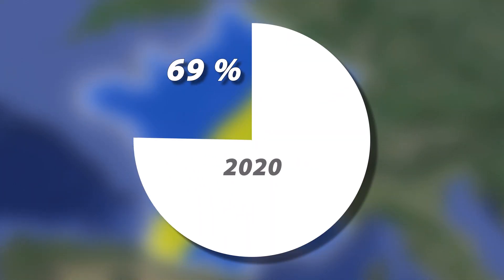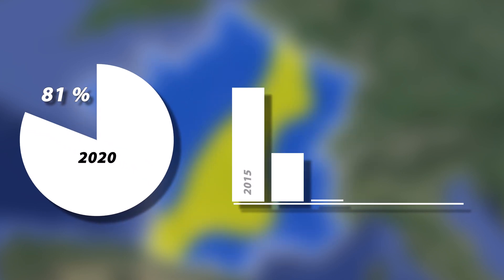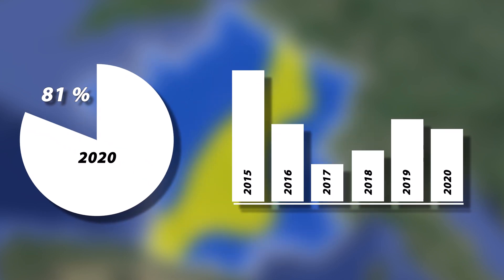As of 2020, 81% of the French population is urbanized, and the rate of urbanization between 2015 and 2020 was 0.72% per year.